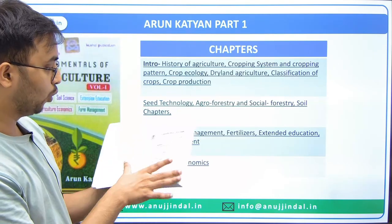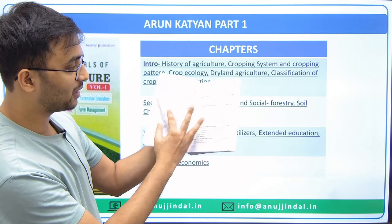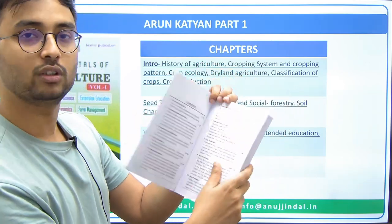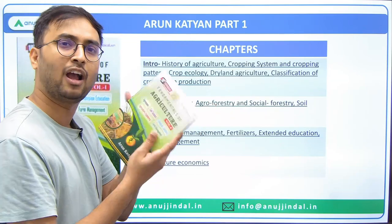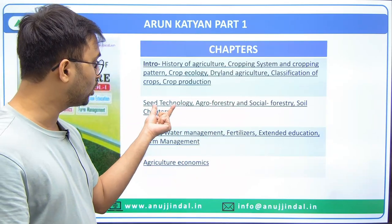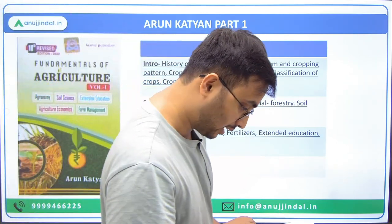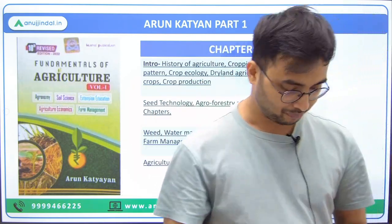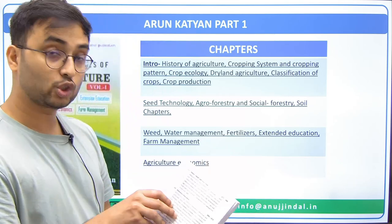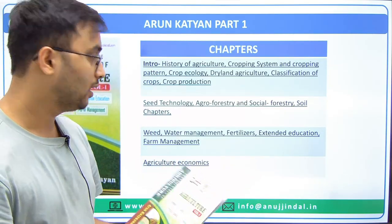In part one, you can go through all these chapters. The next major section is soil-related chapters: soil formation, soil physical properties, soil colloids, silicate clay minerals, soil taxonomy, soils of India, soil organic matter, bio-fertilizers, fertilizers, manure, soil fertility, and productivity. Also covered is seed technology, agroforestry, and social forestry.